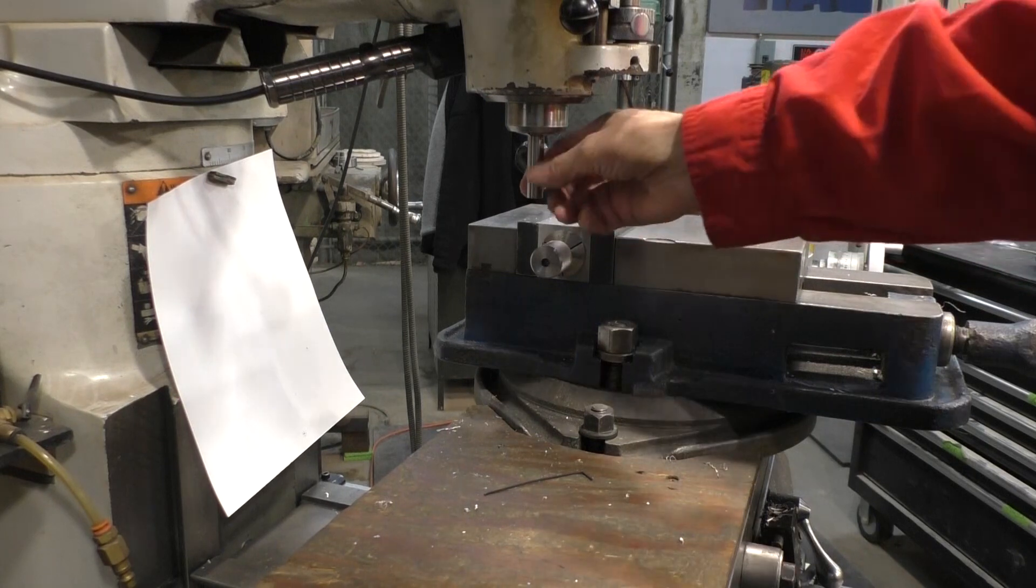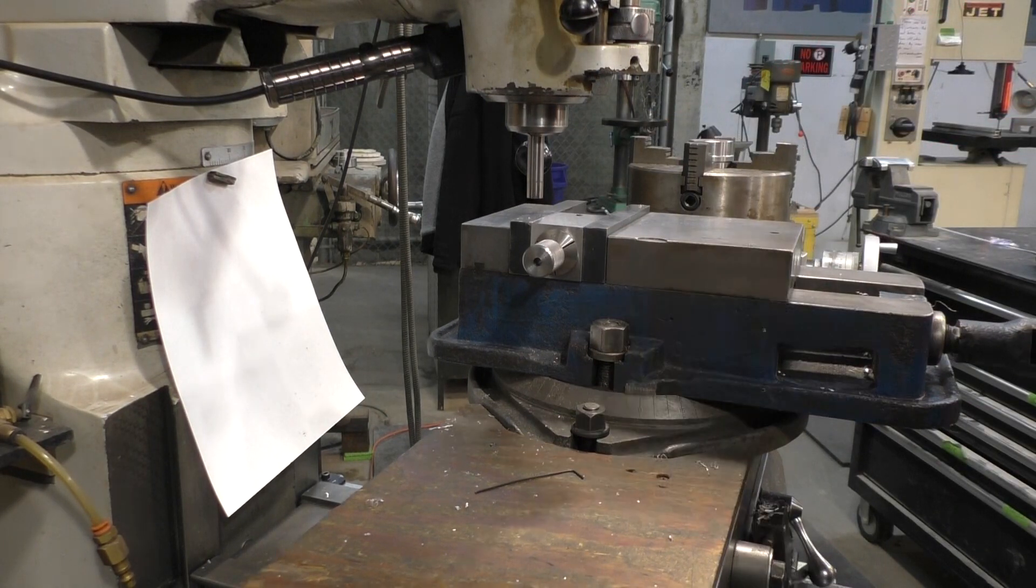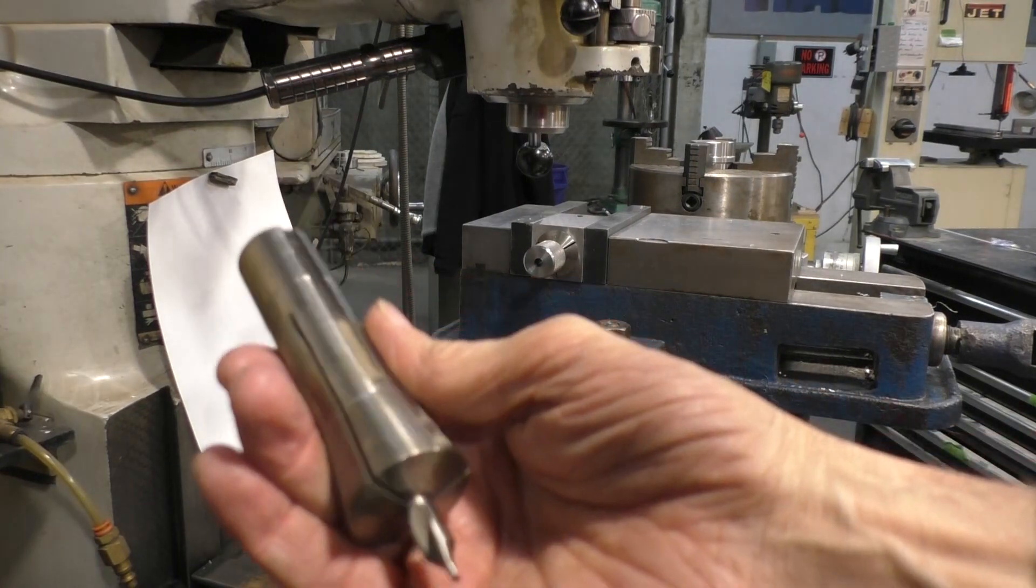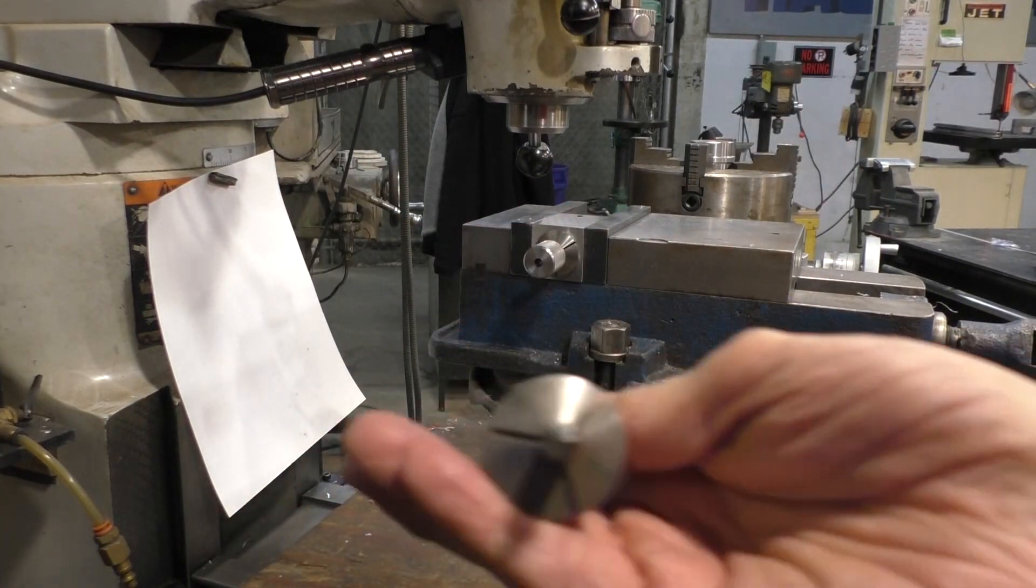Correction, this is the large center finder. I have to come over 250 thousandths right there. I have to get my center drill here to find a 5 sixteenths collet.